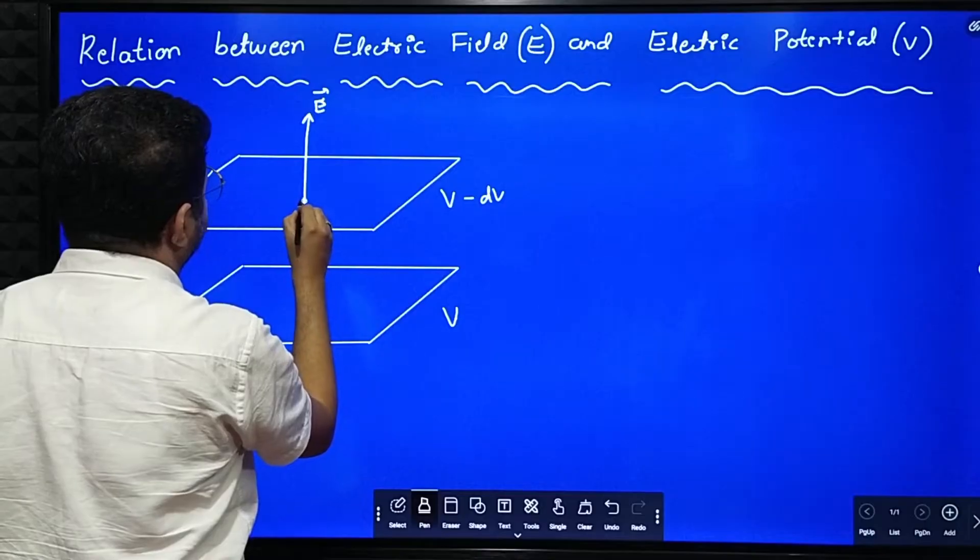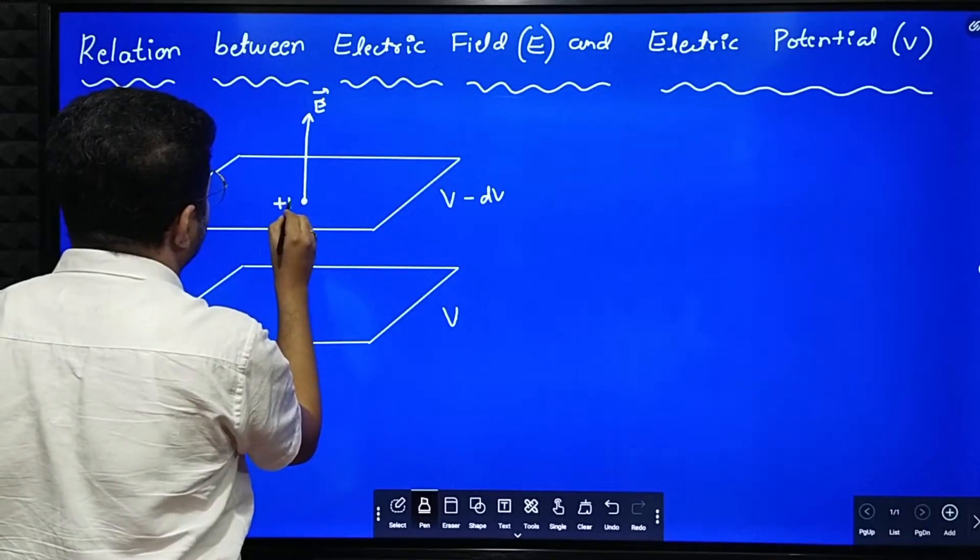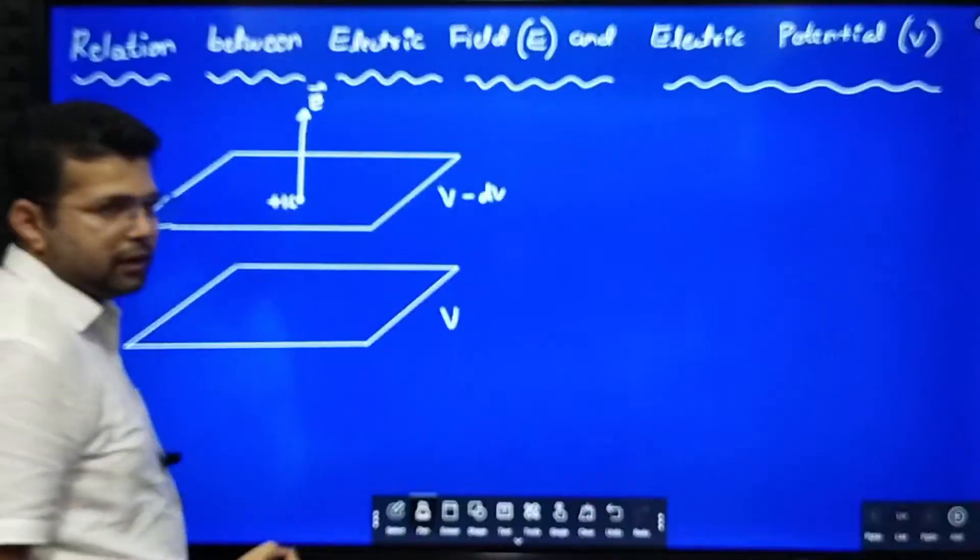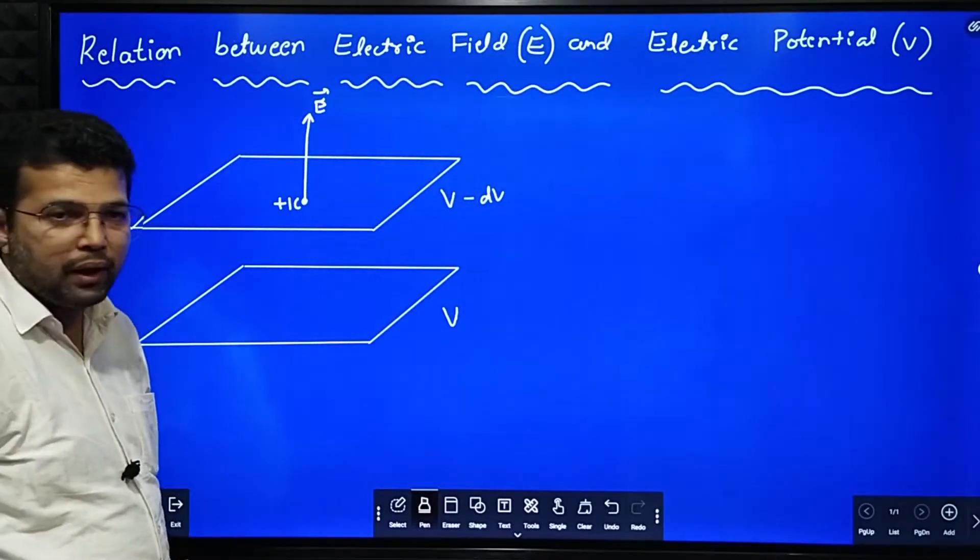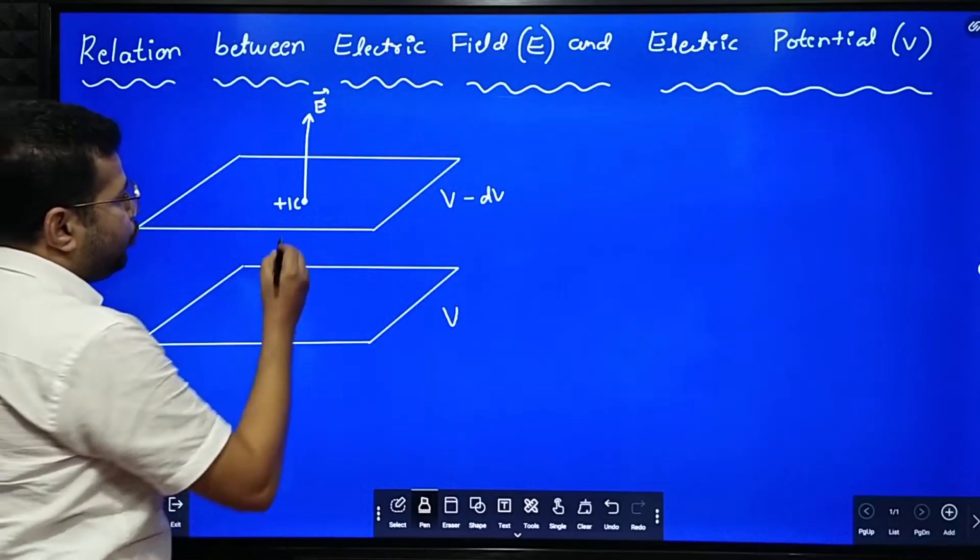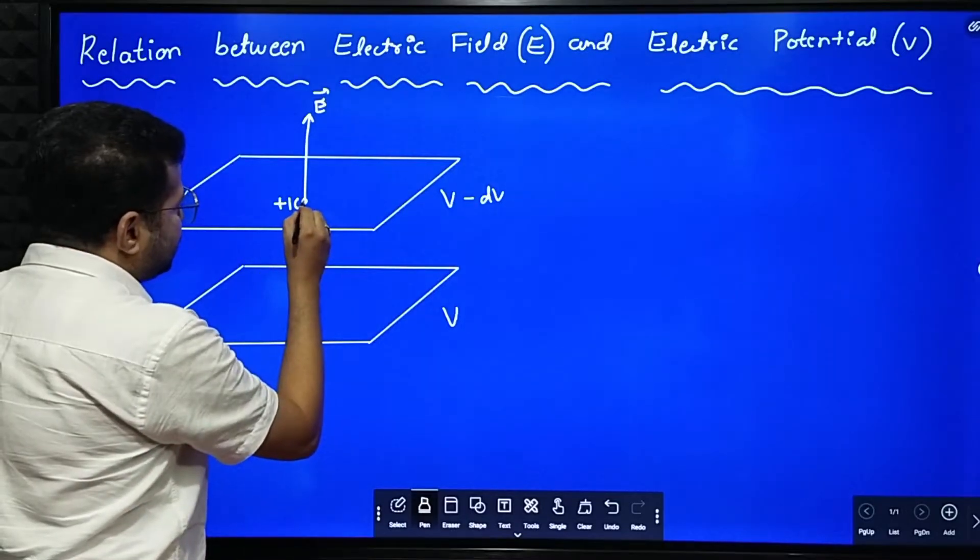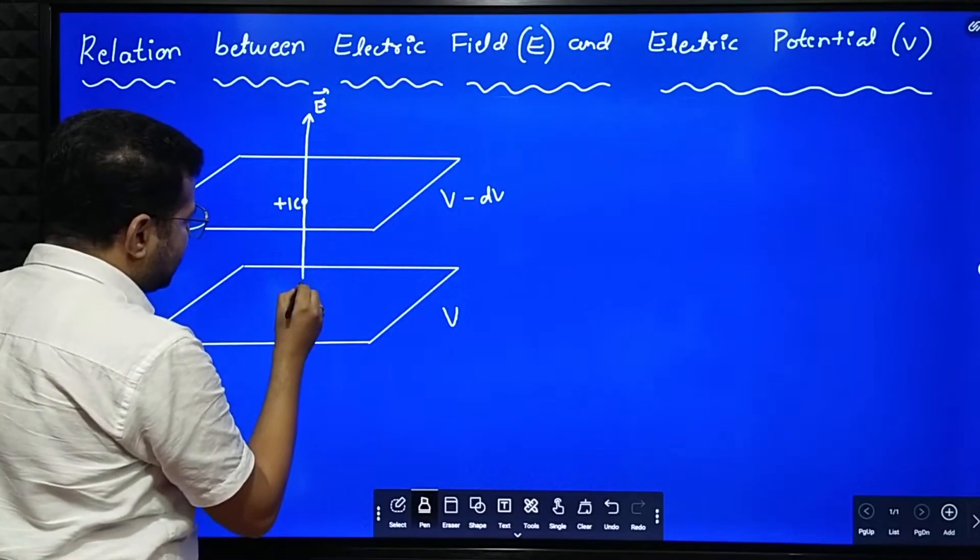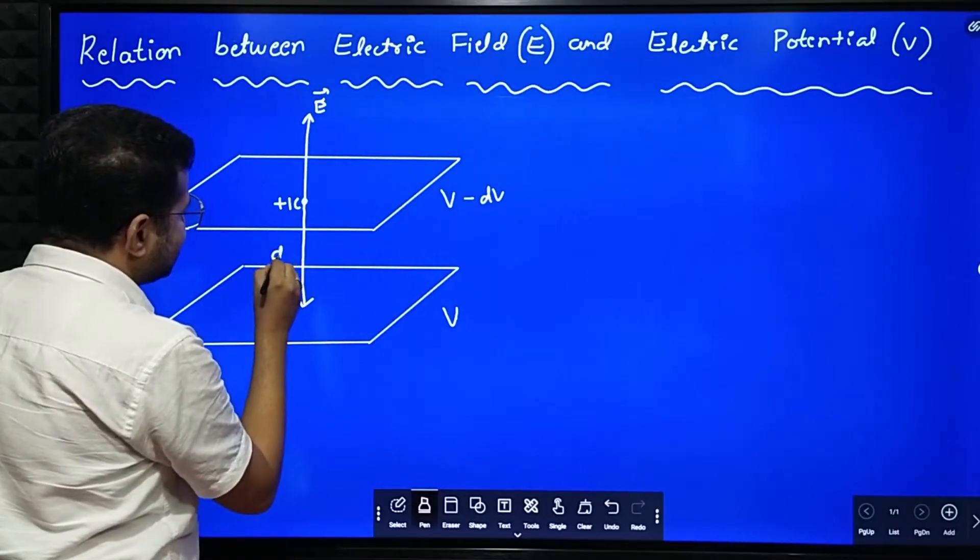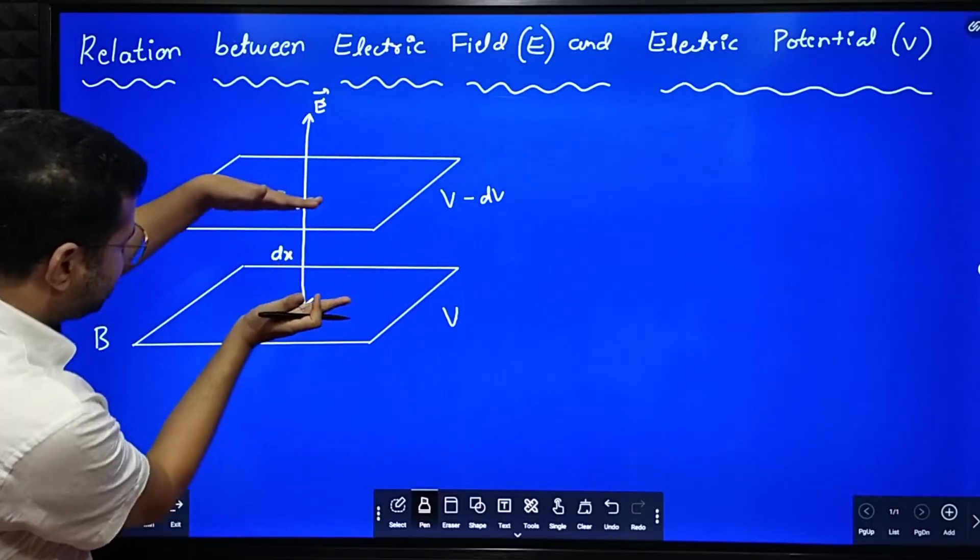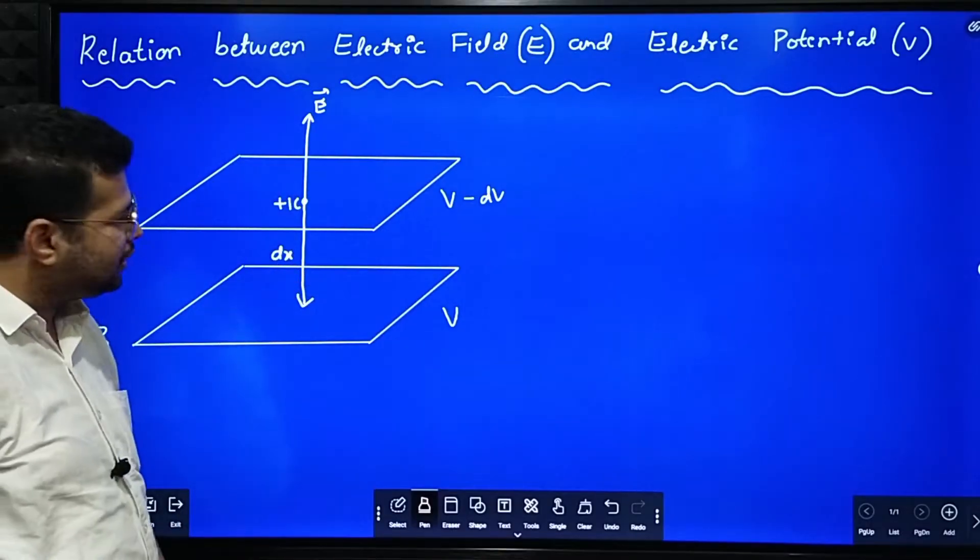Now what we will do, we will consider a unit positive charge here. We will consider a unit positive charge on equipotential surface A. And now we will try to bring this unit positive charge to the equipotential surface B through a perpendicular distance dx. Say dx is the perpendicular distance between those two equipotential surfaces.